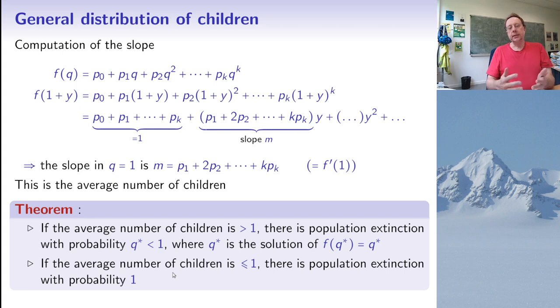So in a sense, it is quite intuitive. So the average number of children has to be larger than 1 for the population to have a chance of survival. What is remarkable, however, is that the answer depends only on this average number of children.